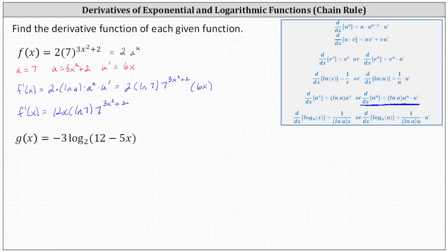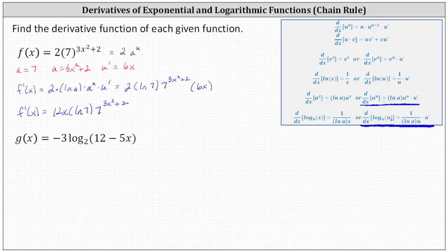Next, we have G of x equals negative three log base two of the quantity 12 minus five x. Looking at our derivative formulas, we won't apply the derivative formula for log base A of x with respect to x, because our input is 12 minus five x, not just x. We'll apply the formula that includes the chain rule, which is: the derivative of log base A of U with respect to x equals one divided by the product of natural log A and U, times U prime.